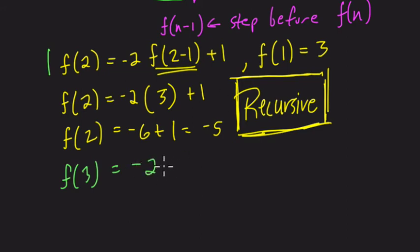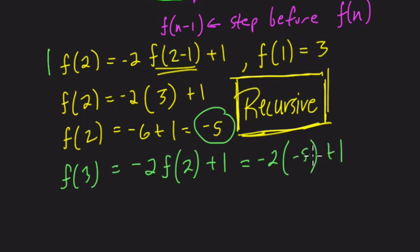It's going to equal negative 2 times f of n minus 1. In this case, that's f of 3 minus 1, or f of 2. And then we're going to add 1 to it. So that equals negative 2 times f of 2, which is negative 5, plus 1, which is 10 plus 1, or 11.